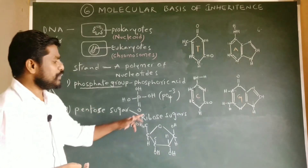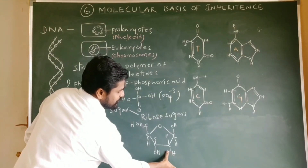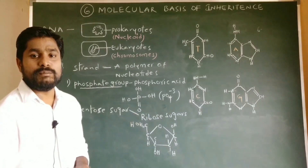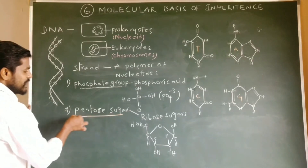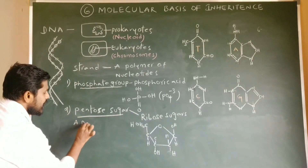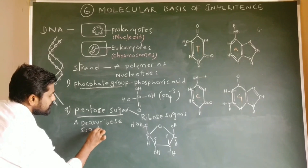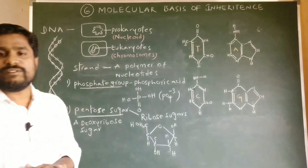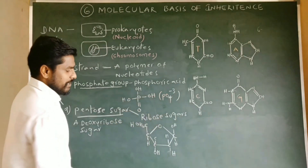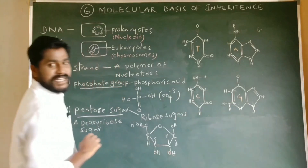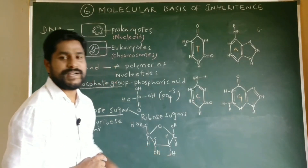In the case of nucleotides of DNA, the ribose sugar is lacking oxygen at the second position, and then the ribose sugar becomes a deoxyribose sugar. The pentose sugar in the nucleotides of DNA is a deoxyribose sugar — that is, a sugar lacking oxygen at the second position.